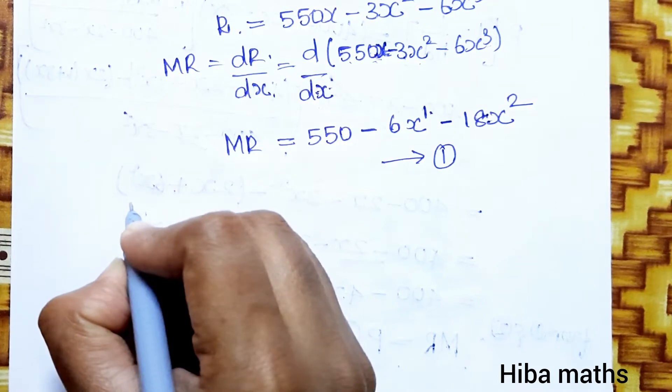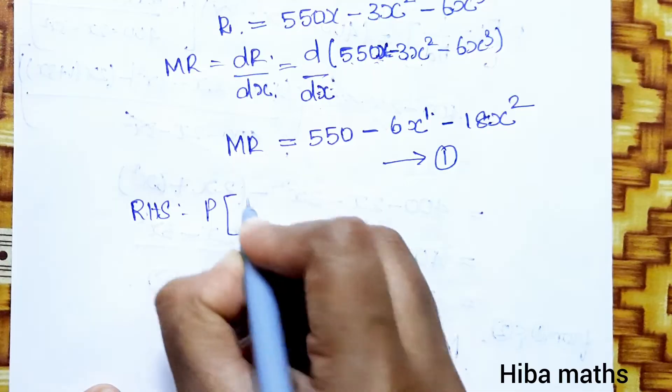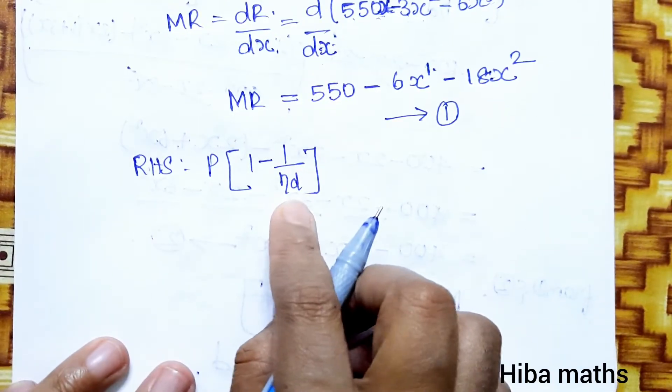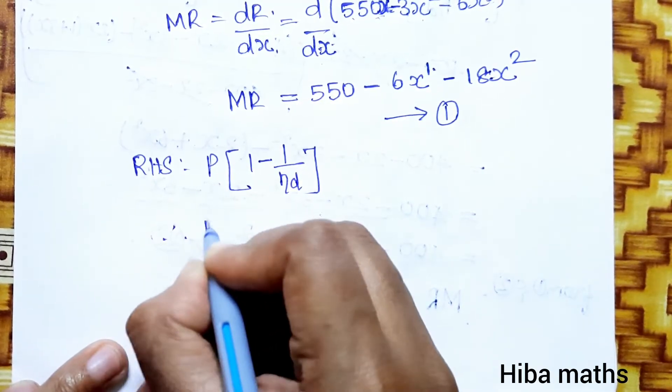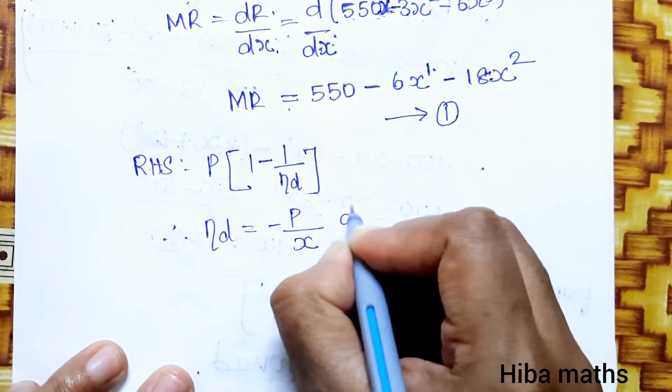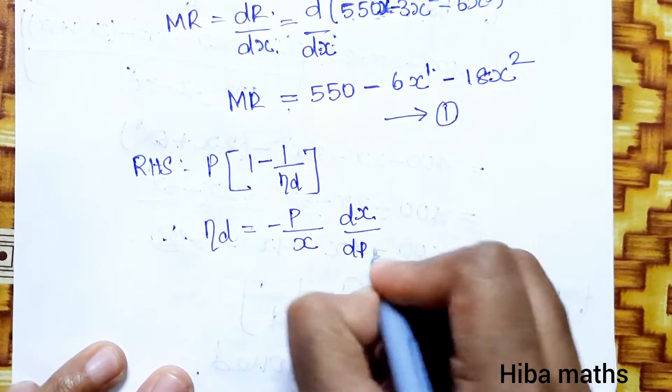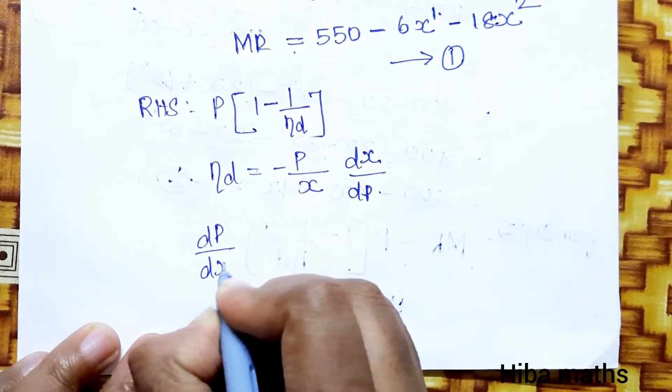Now the RHS, P into 1 minus 1 by eta d. Eta d is elasticity of demand. Therefore, eta d is equal to minus P by x, dx by dP.